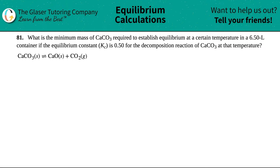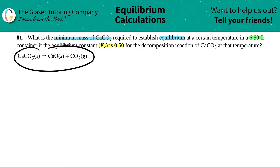Number 81: What is the minimum mass of CaCO3 required to establish equilibrium at a certain temperature in a 6.50-liter container, if the equilibrium constant Kc is 0.50 for the decomposition reaction of CaCO3 at that temperature? They also give us the equation.